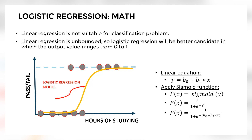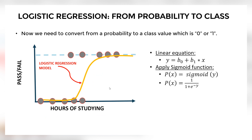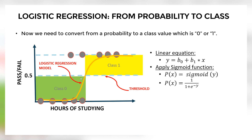Now I have a continuous output, so I need to convert it to two classes. I can simply select a threshold — maybe 0.5. Any value below 0.5 will be classified as class 0, and any value above 0.5 will be classified as class 1. Now I have a model that can do classification based on the probability of the output. After generating the probability, I apply the threshold to determine class 0 or class 1. That's all the intuition.